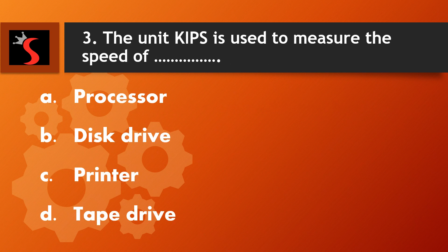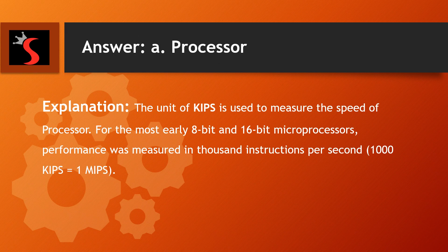The third question is: the unit KIPS is used to measure the speed of? A. Processor, B. Disc drive, C. Printer, D. Tape drive.